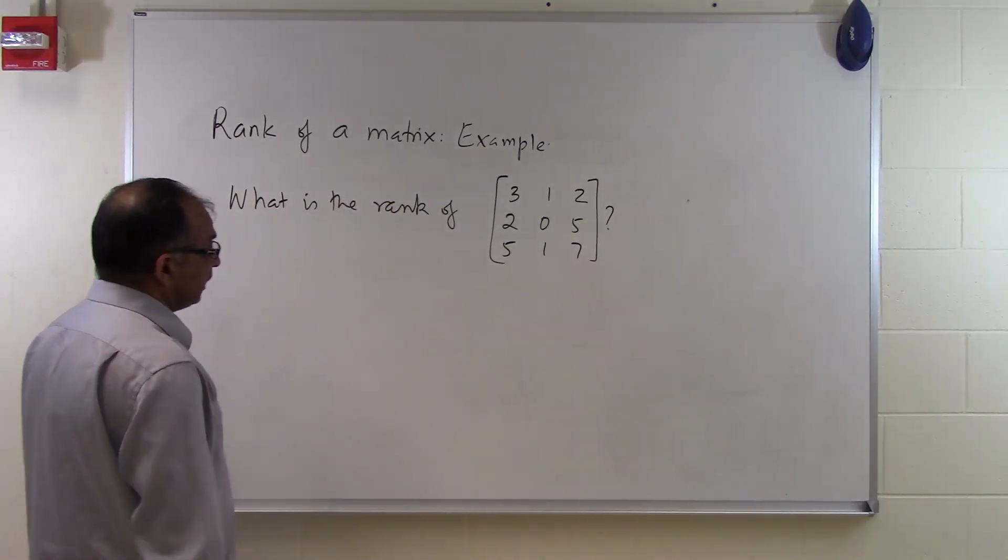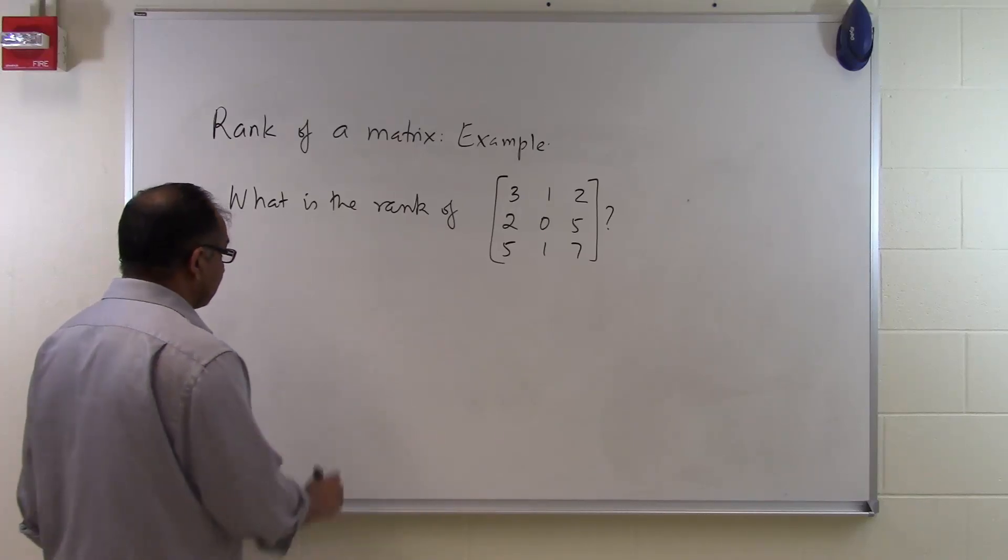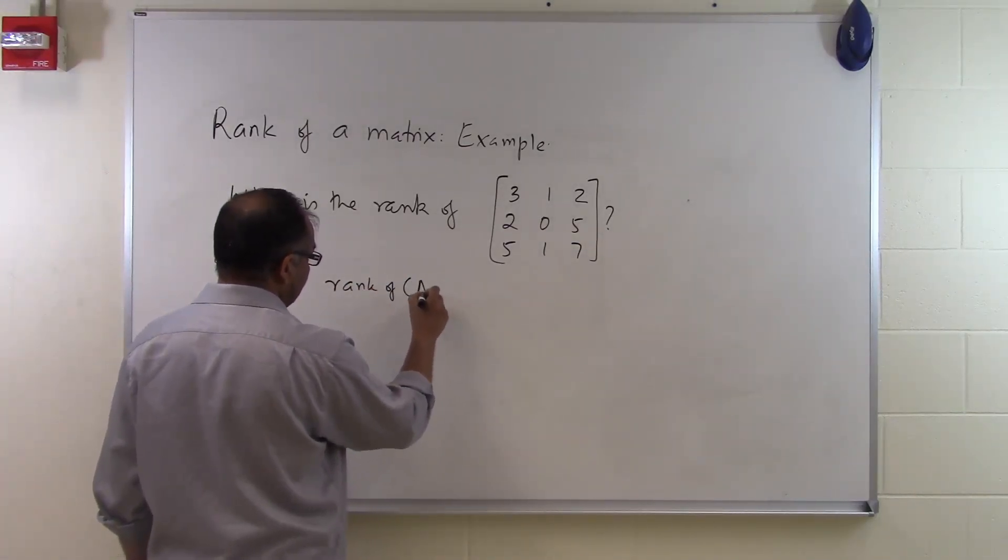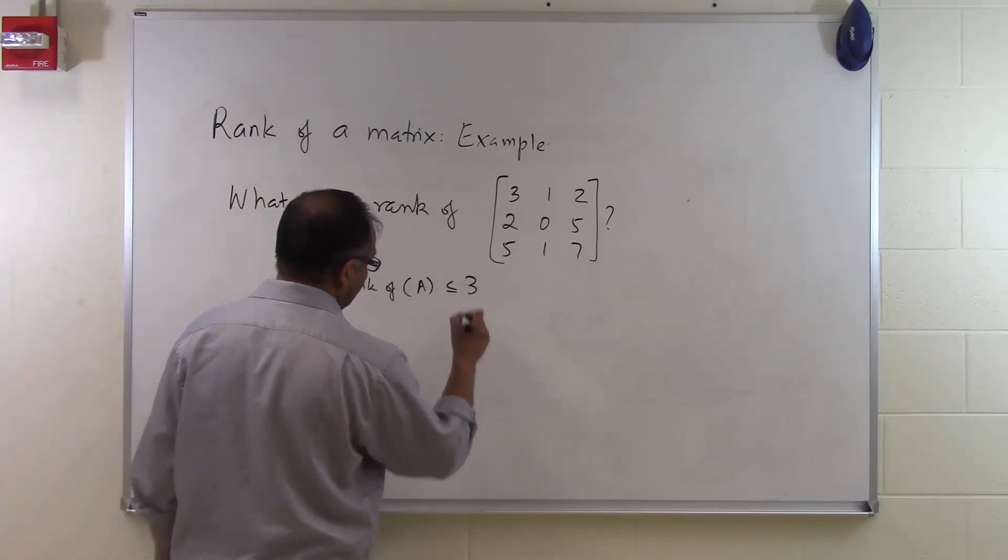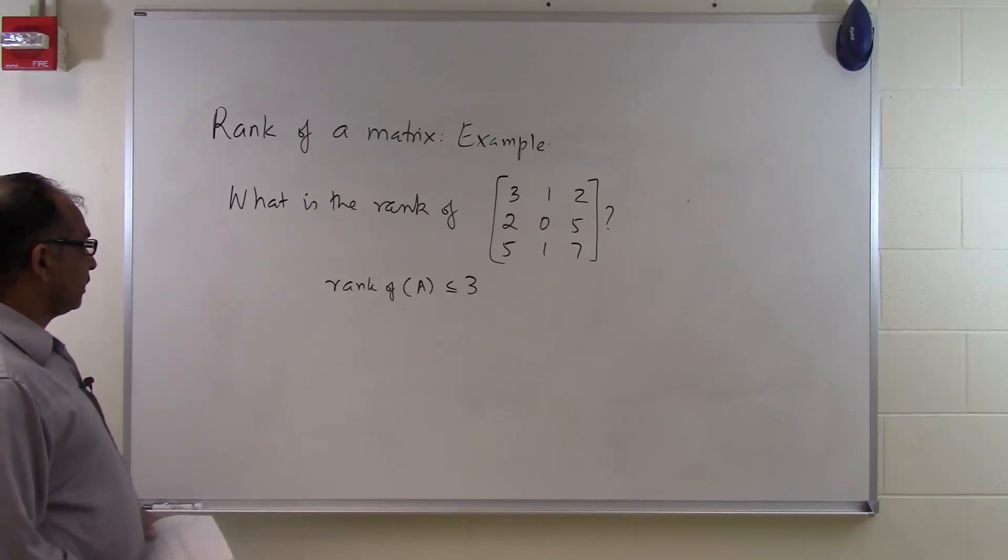So again in this case it's a 3x3 matrix, so the largest order of submatrix which I'm going to get from a 3x3 matrix will be 3. So that itself tells me that rank of A is going to be less than or equal to 3. So it's going to be some number of 3 or less. Let's see what that number is.